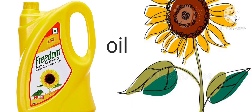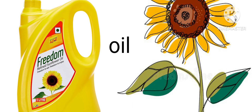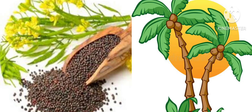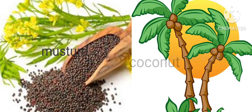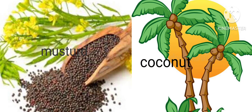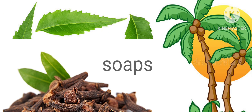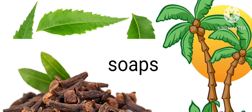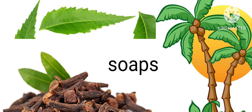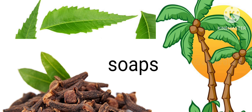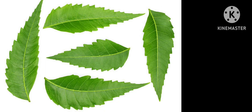Oil. We get oil from the seeds of plants like sunflower, coconut, mustard, and others. Soaps. We get soaps from oils and juices of plants like neem, coconut, and clove.